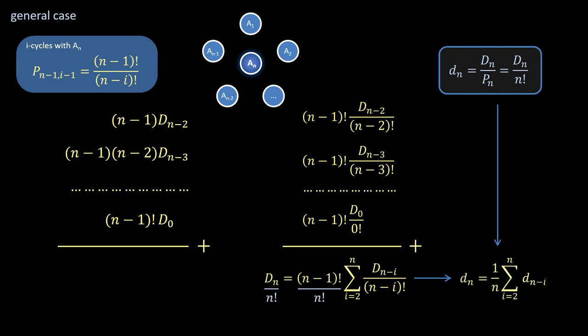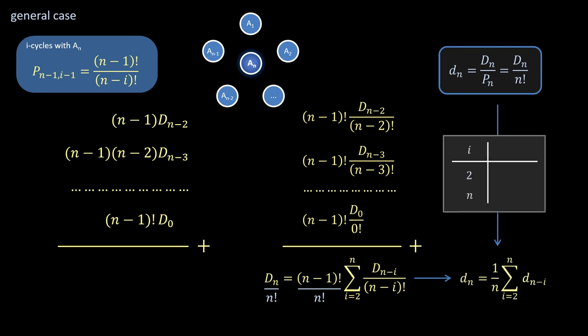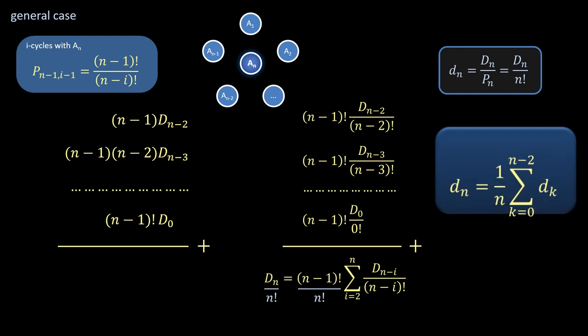Which can be tidied even further by changing the summation index, to end up with a surprisingly concise equation, defining d_n almost as the average of all previous terms up to the penultimate one.